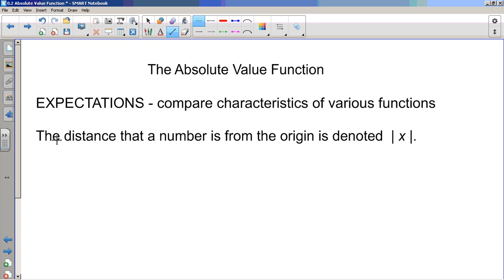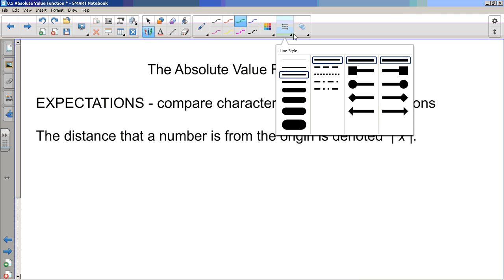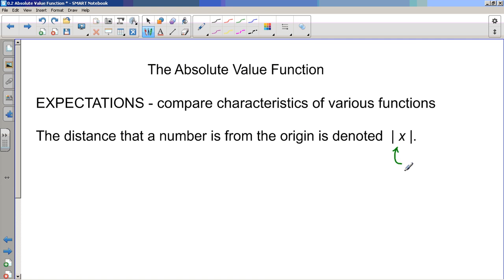It compares characteristics of various functions. And this is going to be a new one for almost all of us. And the idea is the absolute value is the distance that a number is from the origin. And it's denoted with these two lines. Much better. So this we would read as the absolute value of X. The absolute value of X.